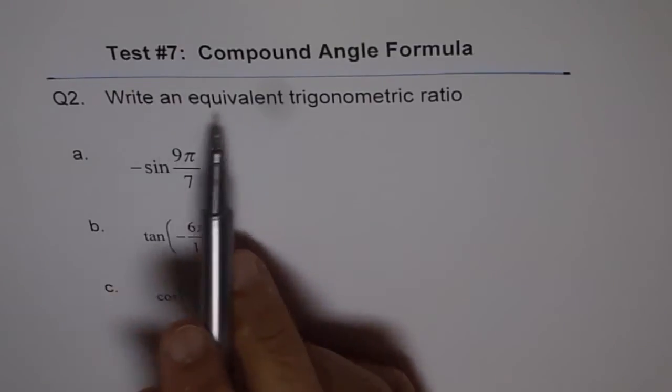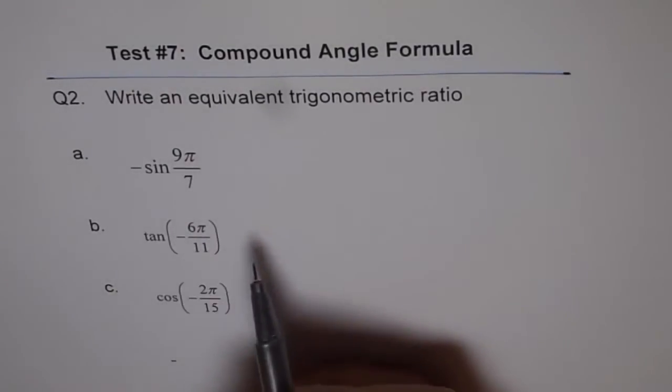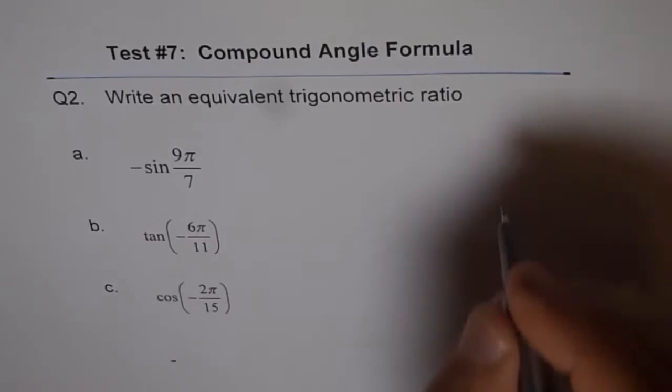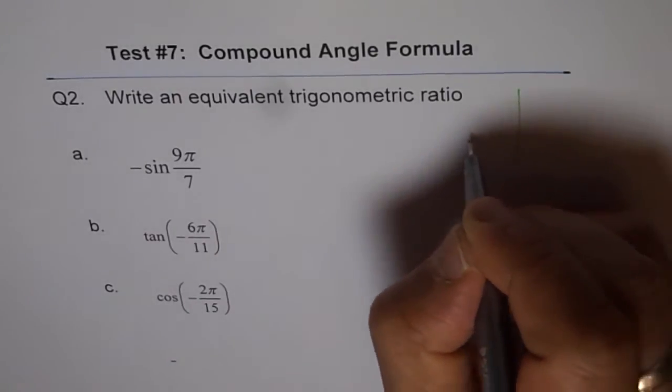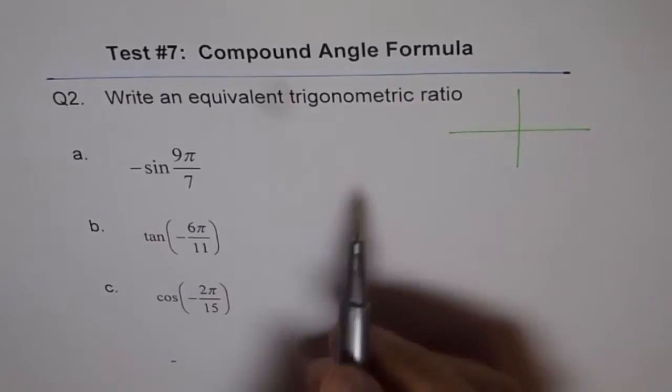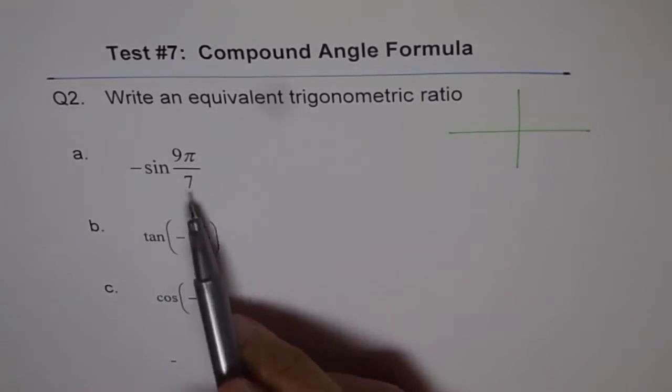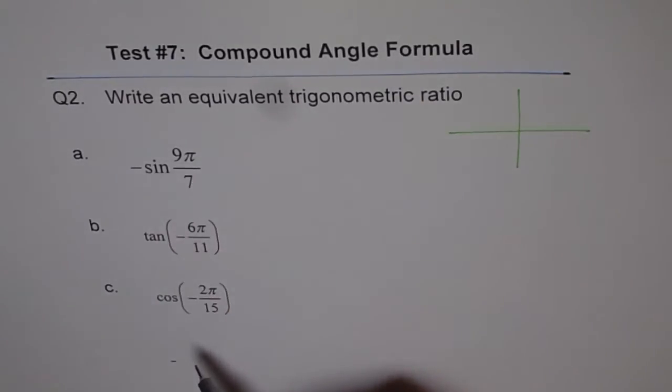Now we say write an equivalent trigonometric ratio. The reason for taking this is that I find students struggling with pi and they do not really understand how to deal with this. I will tell you some easy ways of dealing with it.